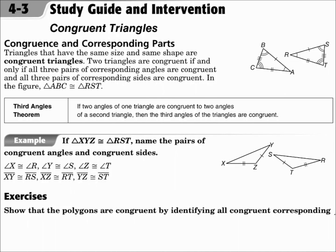This is lesson 4.3, congruent triangles. Your objectives are to name and use corresponding parts of congruent triangles, and to prove triangles congruent using the definition of congruence.